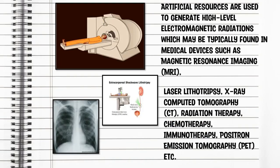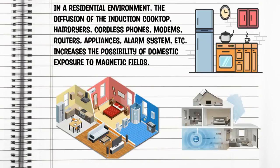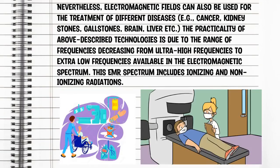Artificial sources are used to generate high-level electromagnetic radiation, which may typically be found in medical devices such as magnetic resonance imaging or MRI, laser lithotripsy, x-ray computed tomography or CT, radiation therapy, chemotherapy, immunotherapy, and positron emission tomography or PET. In a residential environment, the diffusion of induction cooktops, hair dryers, cordless phones, modems, routers, appliances, alarm systems, and etc. increases the possibility of domestic exposure to magnetic fields.